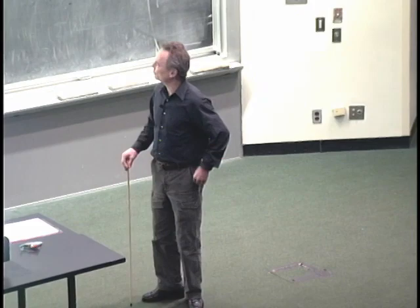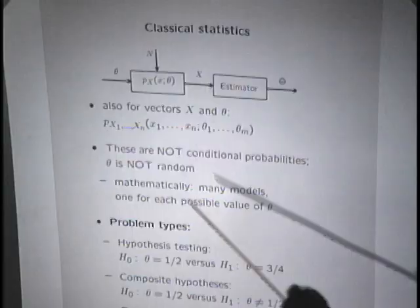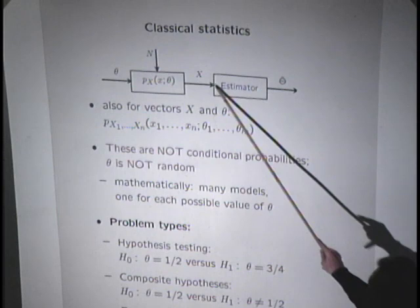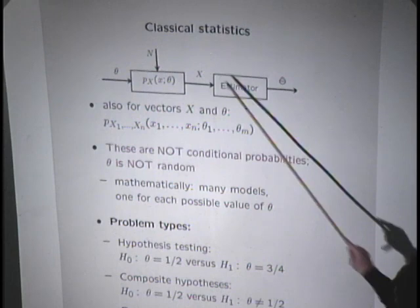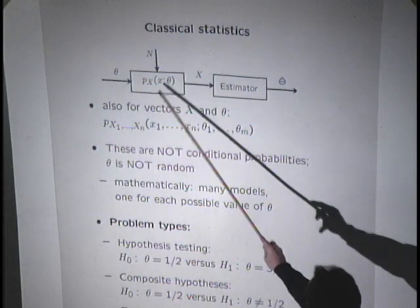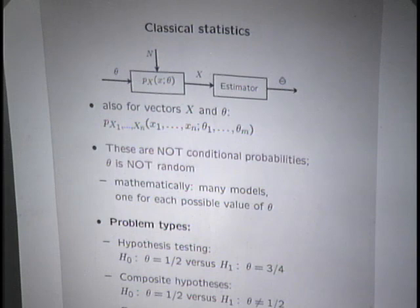Once we have this setting, your job is to design the estimator — a data processing box that takes the measurement and produces an estimate of the unknown parameter. The notation is as if x and theta were single one-dimensional quantities, but everything we say remains valid if you interpret x and theta as vectors of parameters.